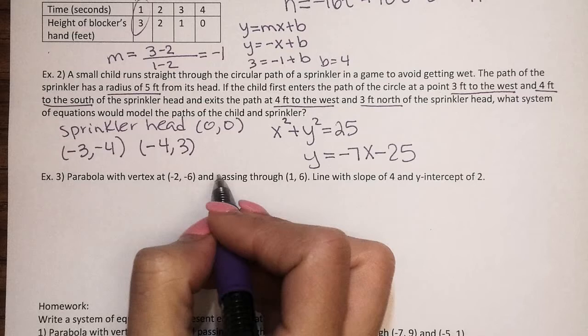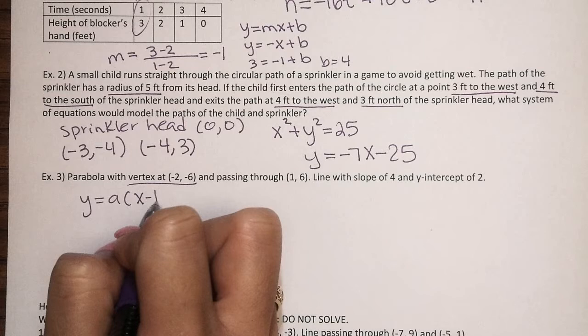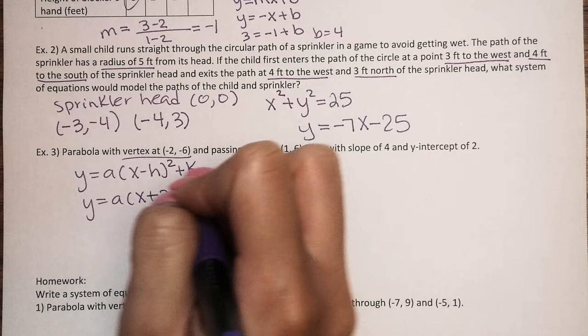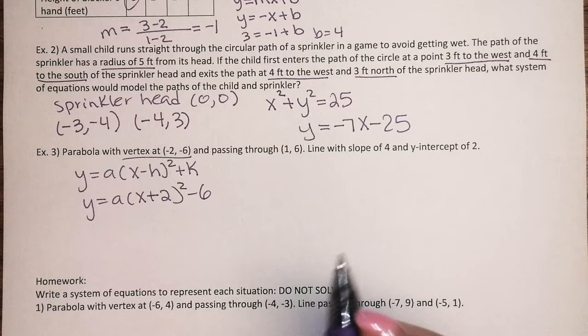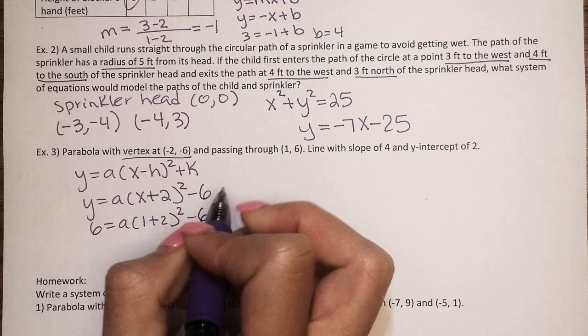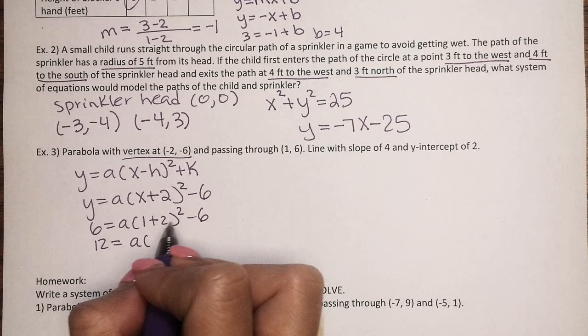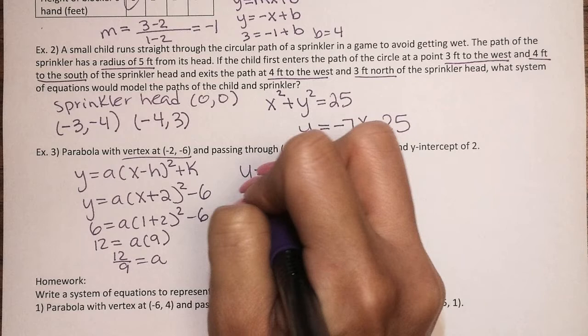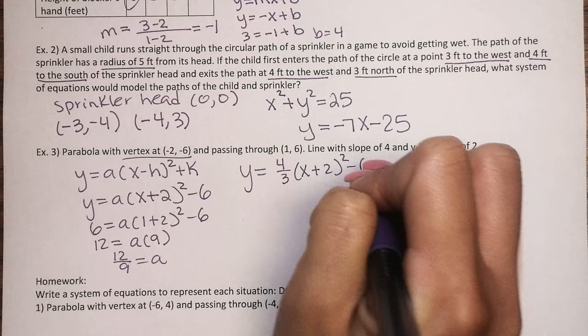So since you have the vertex, you want to start with vertex form, y equals a times x minus h squared plus k, and we have the vertex, so I can just plug that in. y equals a times x plus 2 squared minus 6. I can solve for a by plugging in the point that was given, so the 1 comma 6. 6 equals a times 1 plus 2 squared minus 6. Add 6 on both sides, so 12 equals a, 1 plus 2 is 3, 3 squared is 9. So it looks like a should be 12 ninths, which reduces to 4 thirds. So my quadratic equation would be y equals 4 thirds times x plus 2 squared minus 6.